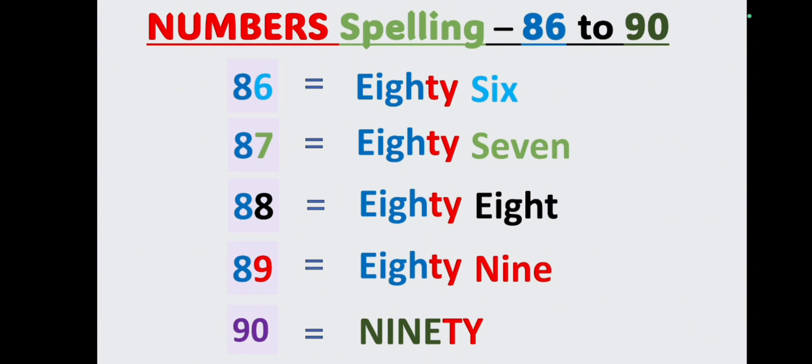If you want to learn the number series, please go through our video of skip counting from number 10 to 100, where we give the spelling along with the pronunciation. It's important to know: if you know how to write 80, and you know how to write 6, then you write 86. If you know 80 and 7, you write 87. Similarly 88, 89, and 90.